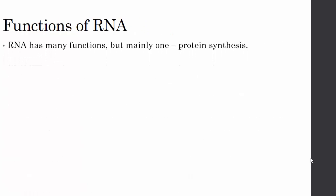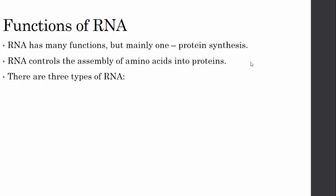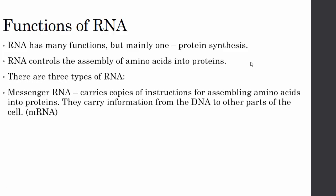Functions of RNA: RNA has many functions, but mainly one — protein synthesis. That's why you find RNA at the site of ribosomes. RNA controls the assembly of amino acids into proteins. Remember, amino acids are the building blocks of proteins. There are three types of RNA. The first is mRNA, known as messenger RNA. It carries copies of instructions for assembling amino acids into proteins.